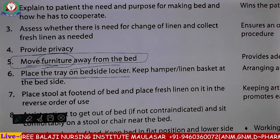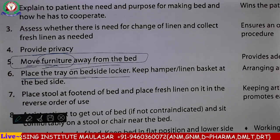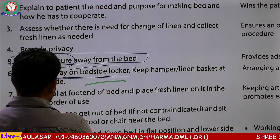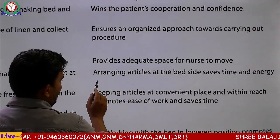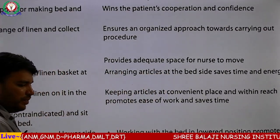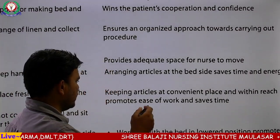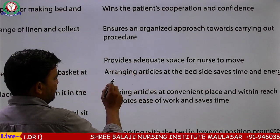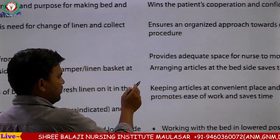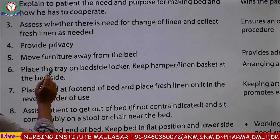Locker पर tray रखें — विस्तर के पास में रख दें। इससे arrangement में help मिल जाएगी। Rationale: provide adequate space for the nurse to move — bed के आसपास से chair वगैरा furniture हटा देंगे, तो nurse को movement के लिए अच्छा space मिल जाएगा। Arranging articles at the bedside saves time and energy।